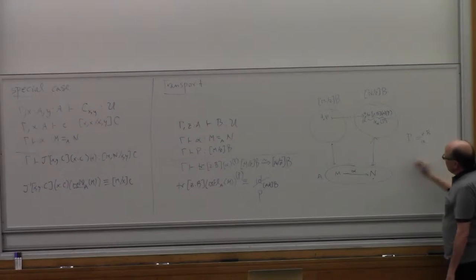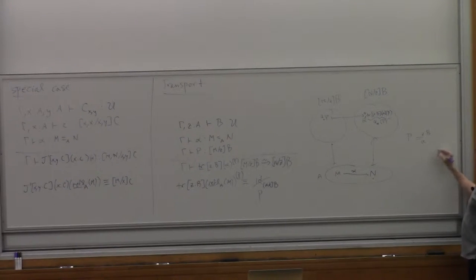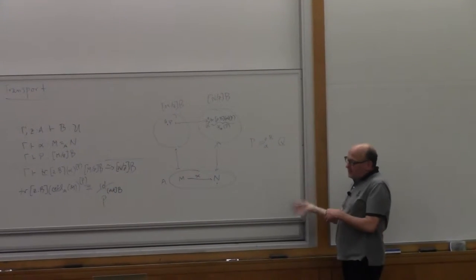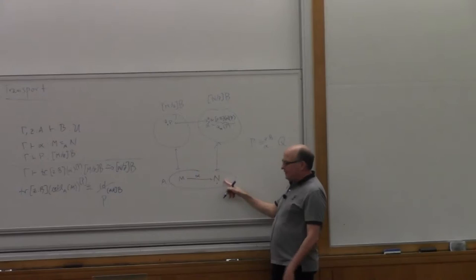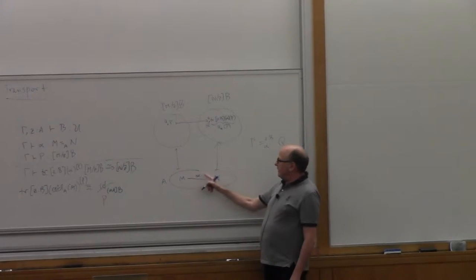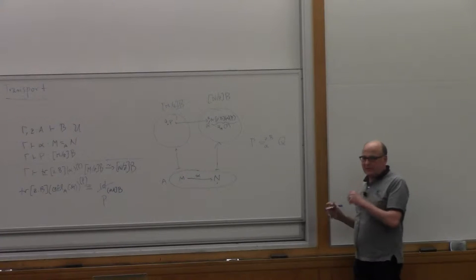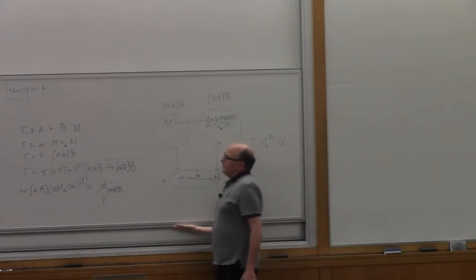P dot B, relative to the identification of M and N, P is morally equal to Q, or can be identified with Q along alpha. So the point is it's modulo the fact that M and N are equal, or identified by alpha, P is equal to Q modulo that fact. So that kind of thing comes up along.